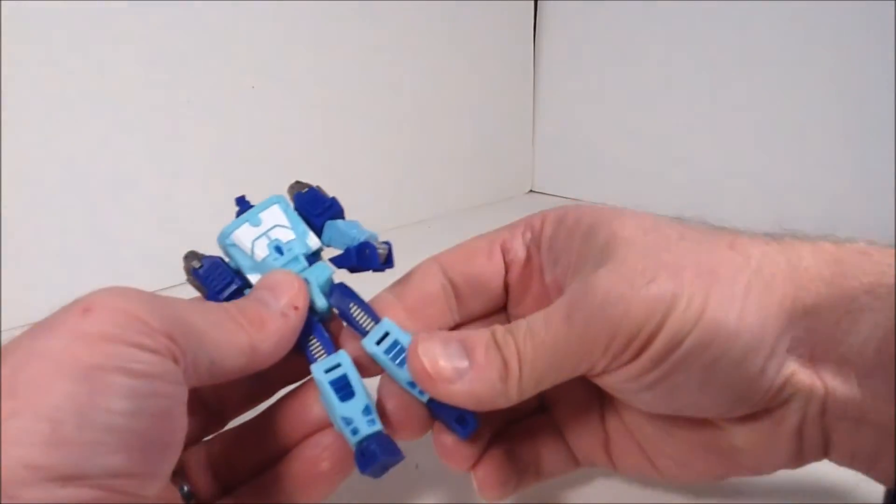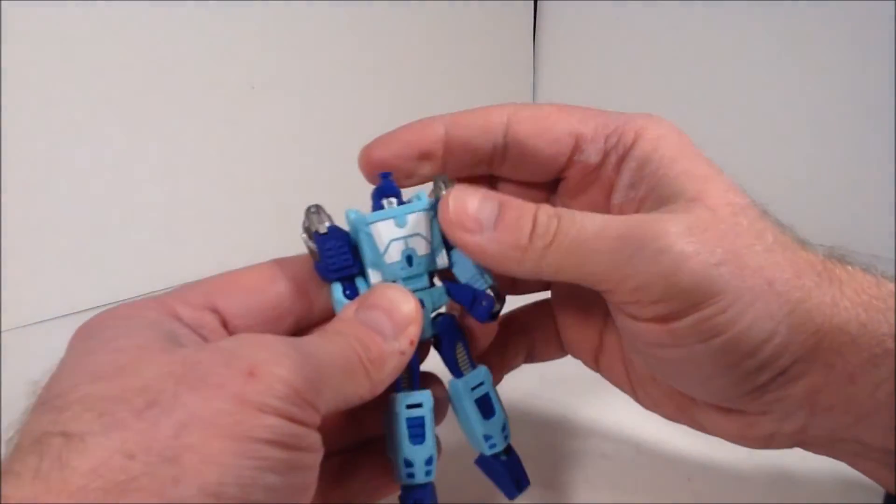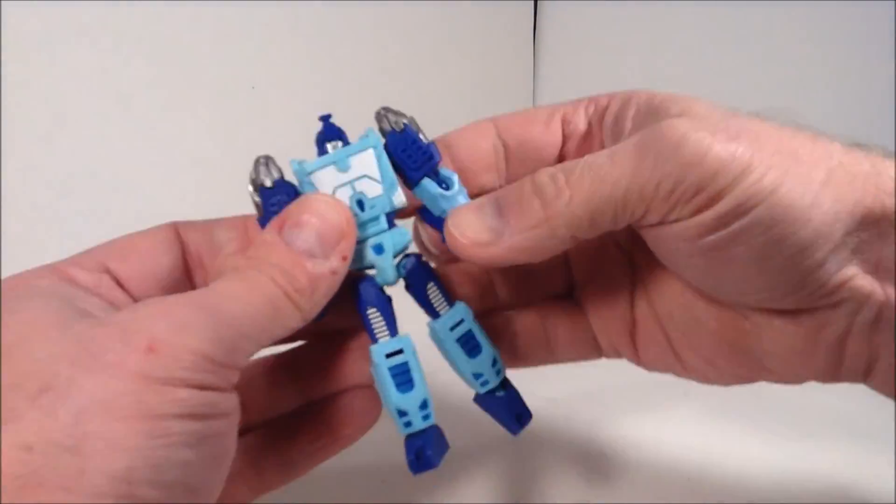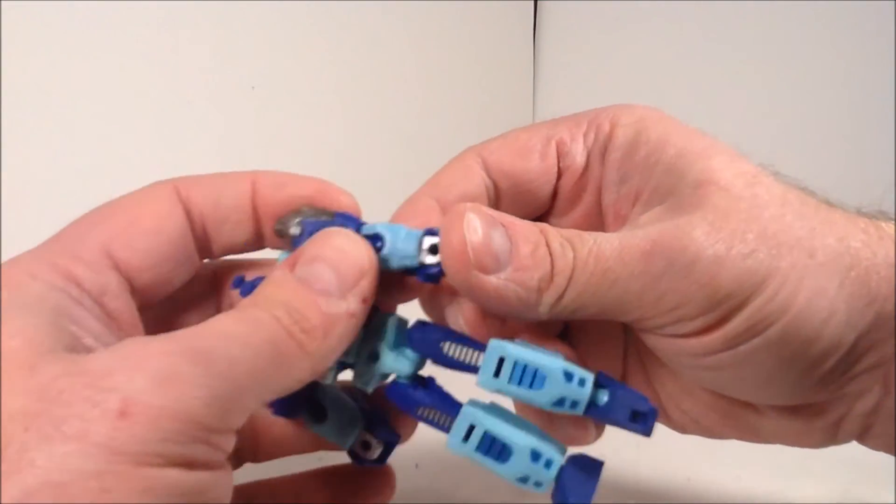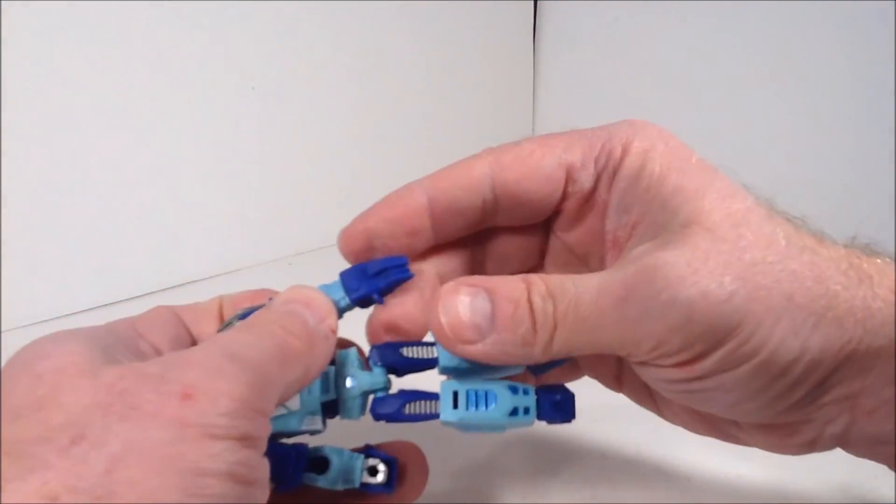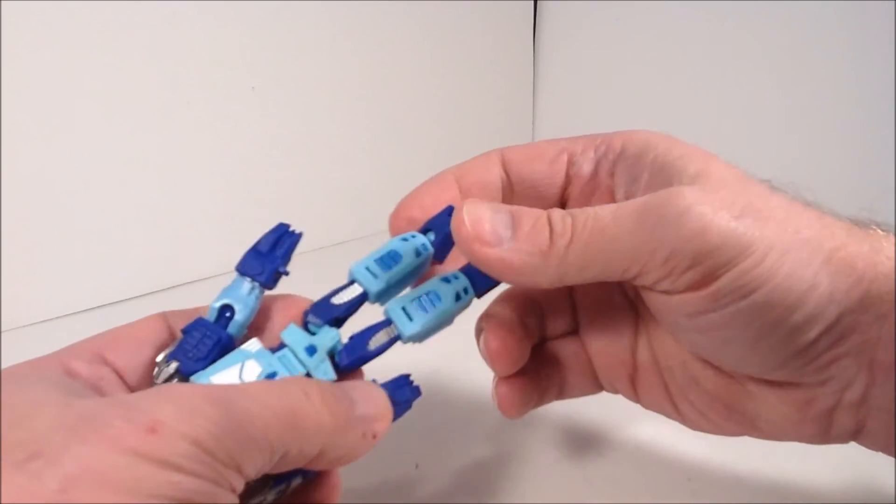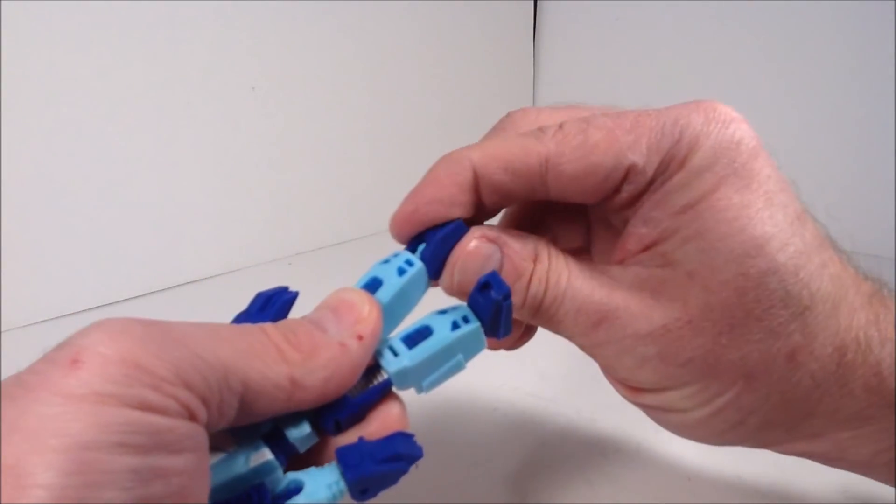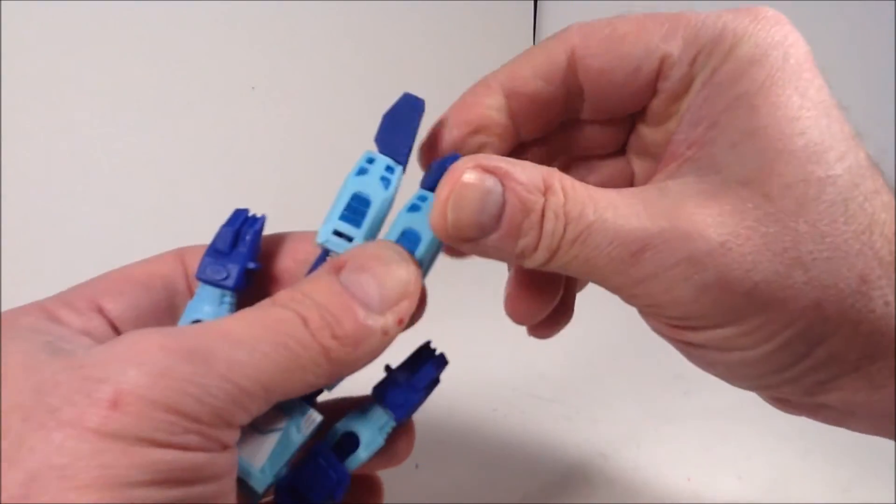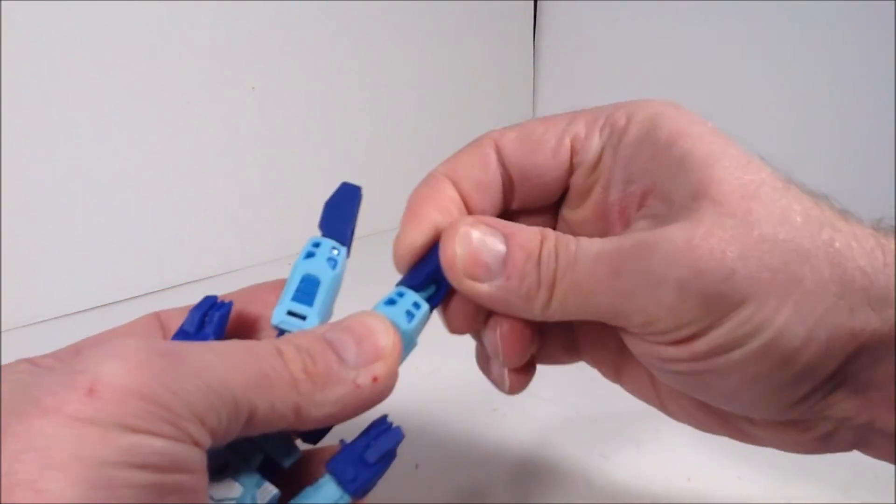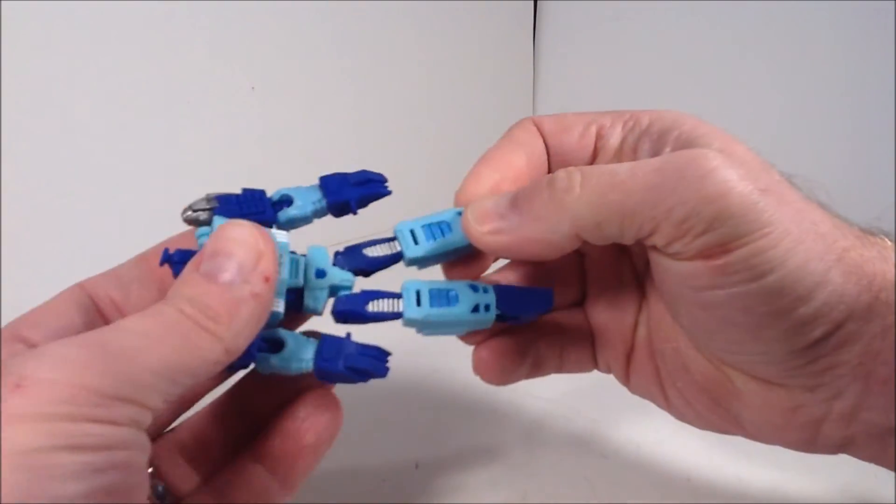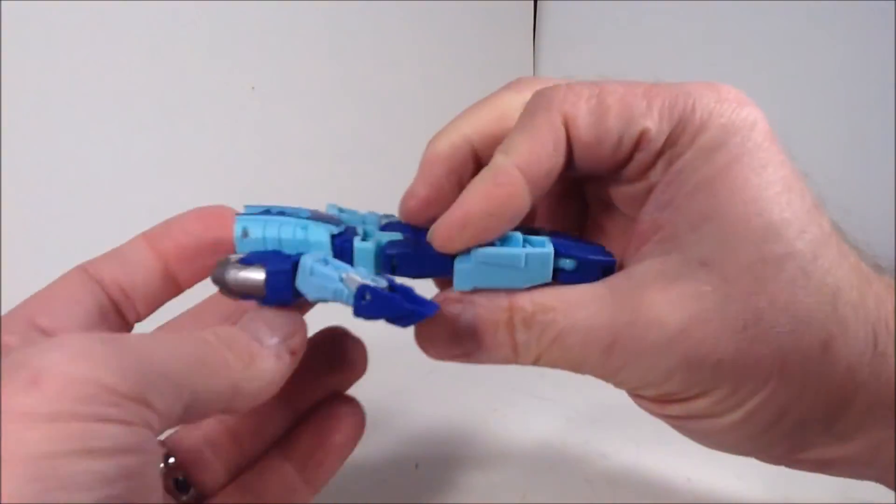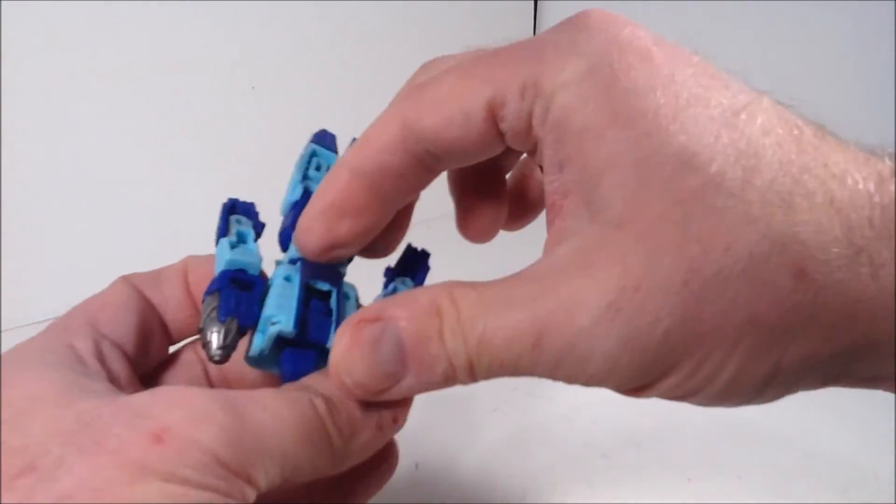The other one transforms exactly the same. Okay. So get these guys out of the way. This guy right here. Whew! Let's see if I can remember how to transform him. Okay. So first thing we do is we bring these things up around his hands. The feet. You rotate these like this. Pull them up. Rotate them. I'm hoping I remember that right. I've only transformed this guy once. So bear with me if I get it wrong.